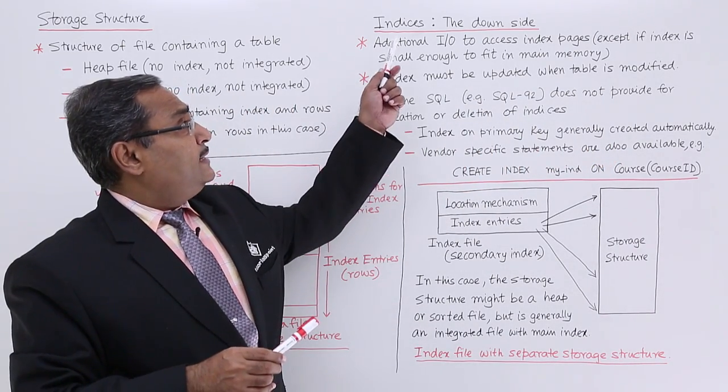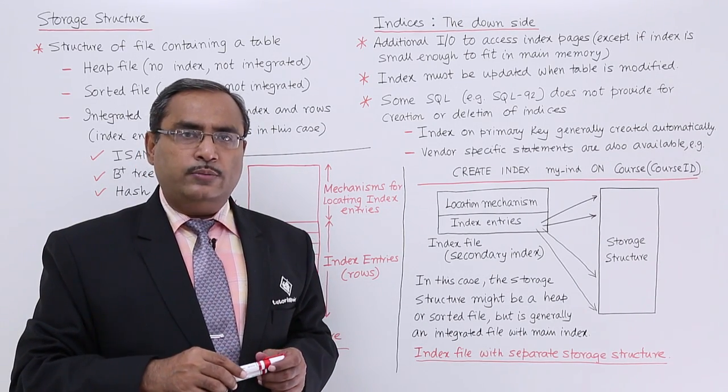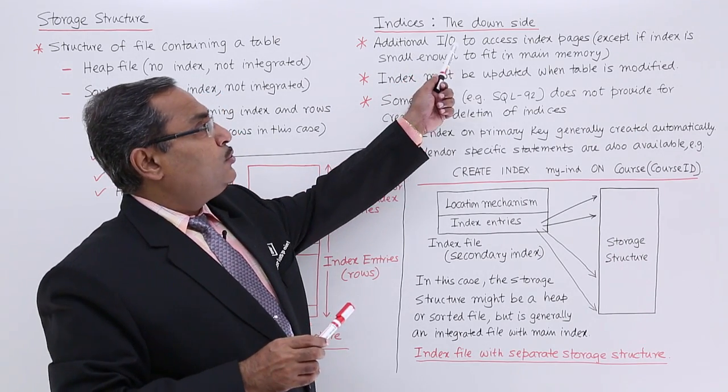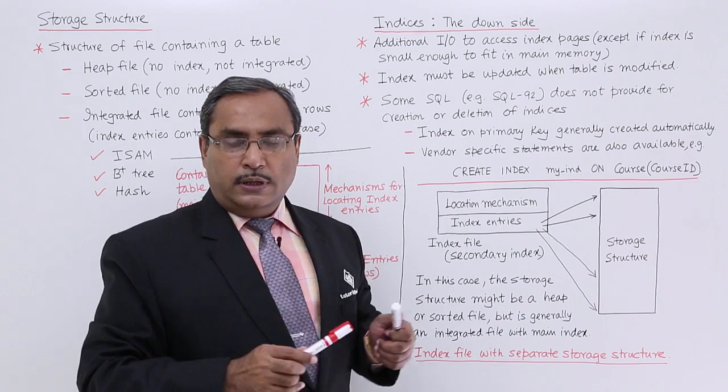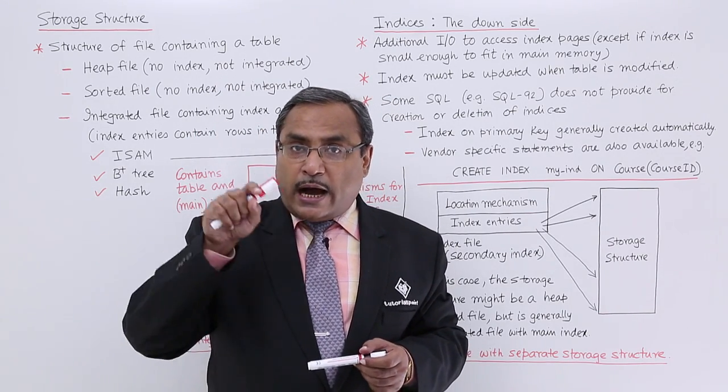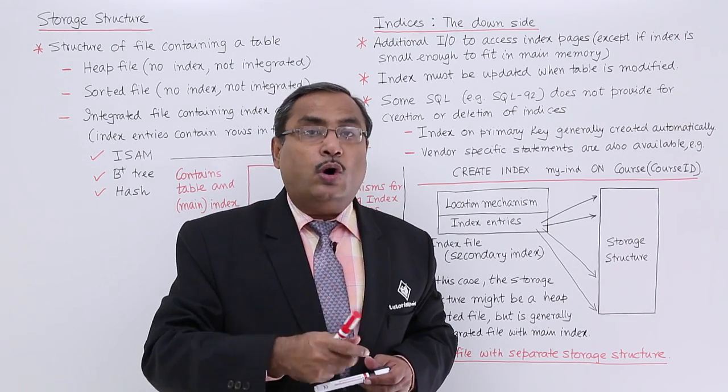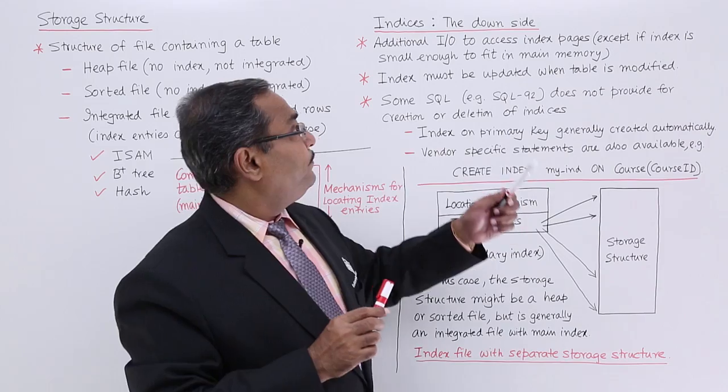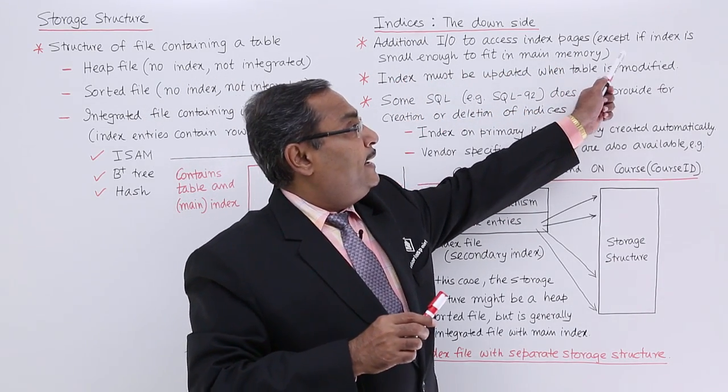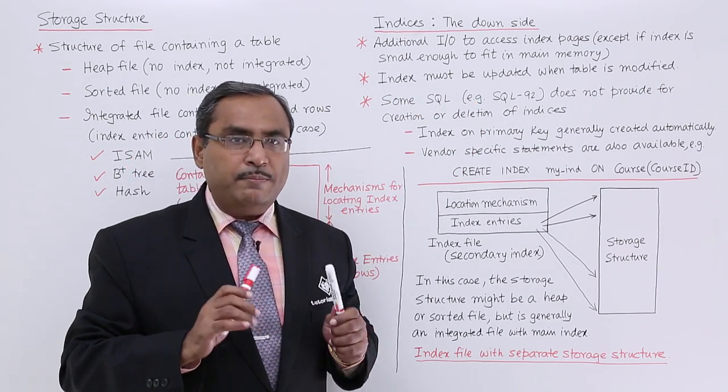In these indices, what is the downside? There are some difficulties whenever we are having some indices. That is additional I/O to access index pages. Before accessing the record details, I shall have to access the respective index. So extra I/O operation is required for that - additional I/O to access index pages, except if the index is small enough to fit in the main memory.